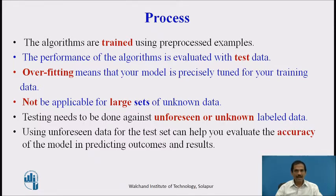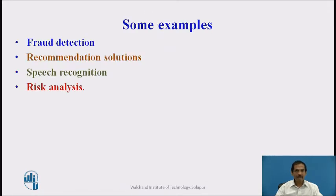We are not making it a generalized learning algorithm, and testing needs to be done against unforeseen or unknown labeled data. So even if we do not have the complete data, we should be able to predict what data is missing. Using unforeseen data for the test set helps evaluate the accuracy of the model in predicting expected outcomes. Some examples of supervised learning are fraud detection, recommendation of solutions, speech recognition, and risk analysis.